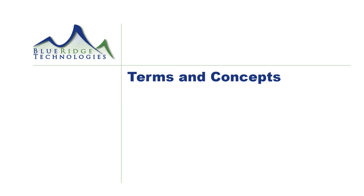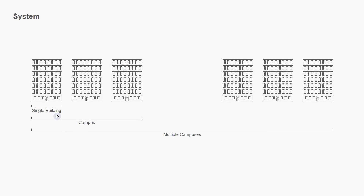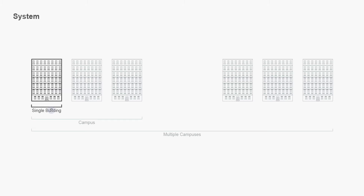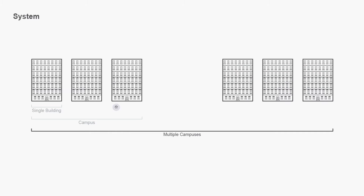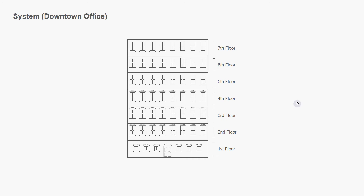Now that we've defined our network terms, let's begin defining the building terms. Building terms include system, area, zone, and channel. System is a contextual term and can be as small as a single building with an automation system, or larger to include multiple buildings on a campus level, or larger still to include multiple campuses. For our training, we'll define a system that encompasses our downtown office building.